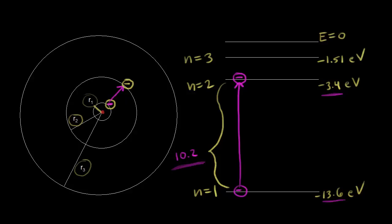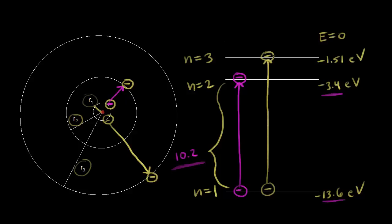To cause the electron to jump from the first energy level all the way to the third energy level, you'd need to provide enough energy for that transition. Since the third level is negative 1.51 and the first is negative 13.6, taking 13.6 minus 1.51 gives us how much energy is needed. That works out to 12.09 electron volts — provide that, and you can promote the electron to the higher energy level.